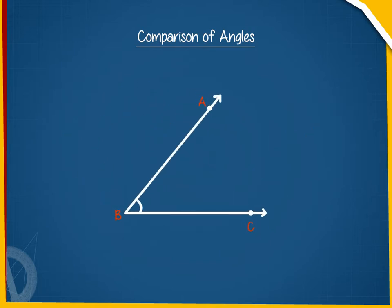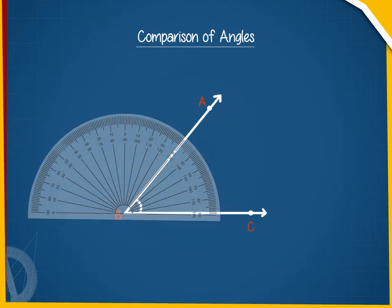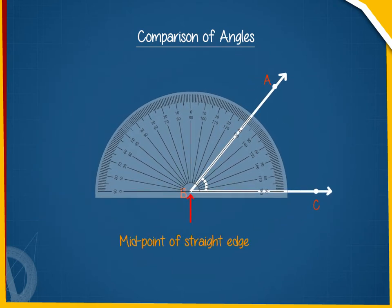Let us measure the given angle ABC. First, we will place the protractor so that the midpoint of its straight edge lies on the vertex B of the angle.